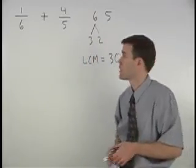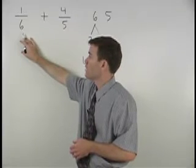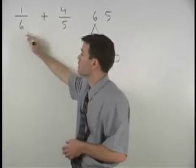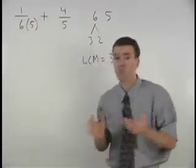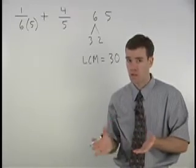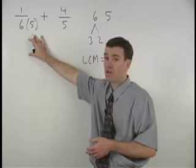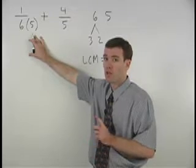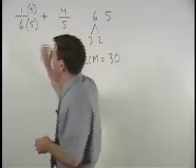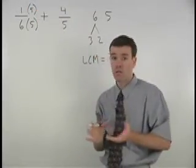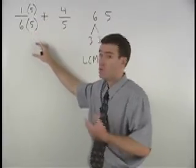In order to get a denominator of thirty in the first fraction, we must multiply our denominator of six by five. The problem is we can't just multiply the denominator of a fraction by five because that changes its value. However, if we also multiply the numerator of the fraction by five, we're actually multiplying the fraction by five over five, which is one.